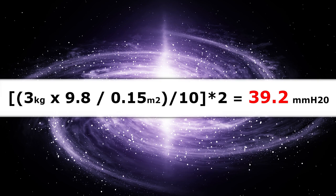Divided by 10 is the conversion from Pascal to mm in water column. And the final times 2 is the gain of the wedge bellows.